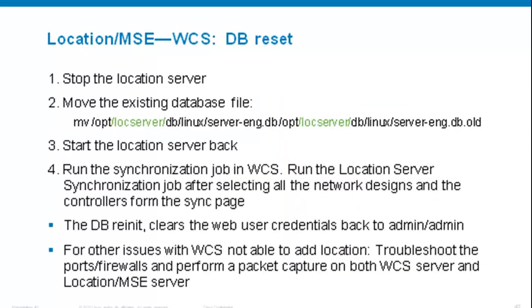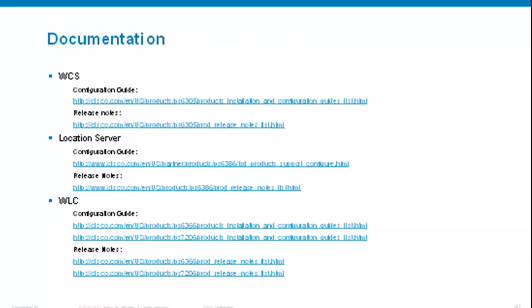One main thing you can do for location is reinitialize the database: remove the server-eng.db file and restart the location service, which will create a new database and fix most common client tracking issues. The most important documentation for each component is the release notes and configuration guides for WCS, location server, and WLC.